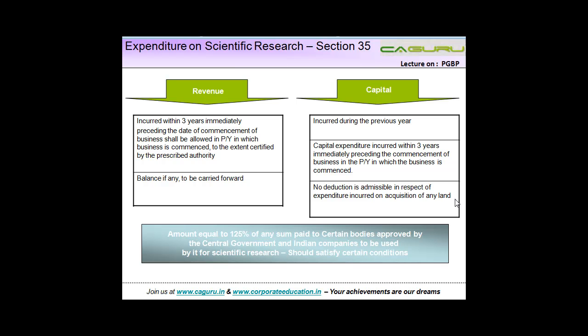In order to promote scientific research among industries, there is an advantageous scheme or advantage given under the Income Tax Act. We know that capital expenditure is normally capitalized and you get depreciation on that. You're not allowed the entire cost of capital expenditure in the year in which you incur it. But that's not the case if you incur any expenditure on scientific research. What are the provisions? Let's now see them one by one.